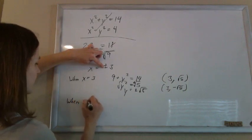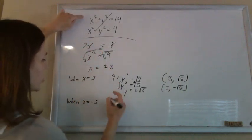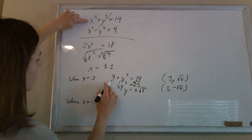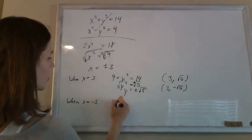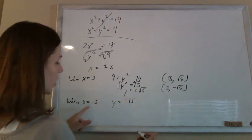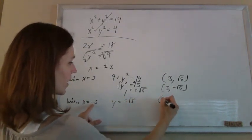when x is negative 3, plug that in. You're actually going to get the same thing, right? Because negative 3 squared is also 9. So you'll also get y is plus or minus root of 5. So two more ordered pairs.